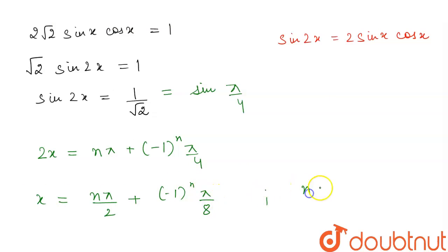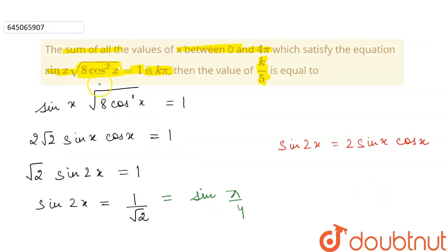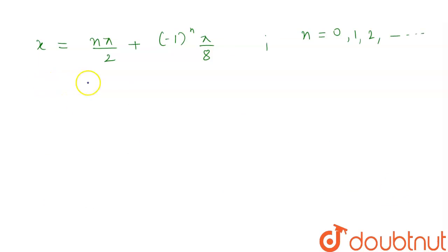Here n goes from 0, 1, 2 to infinity. In the question it is asked to find the sum of values where x is between 0 and 4π. So we find which values of n keep x in this range.